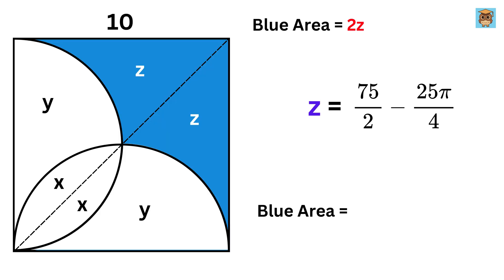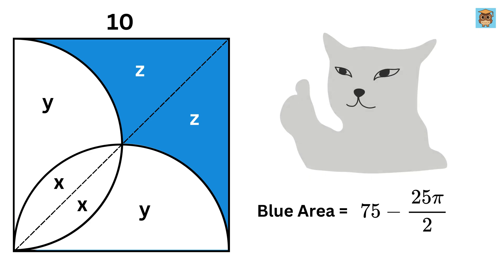Thus, the area of the blue region, which is equal to 2z, will be 75 minus 25 pi over 2. That's our answer. So good!